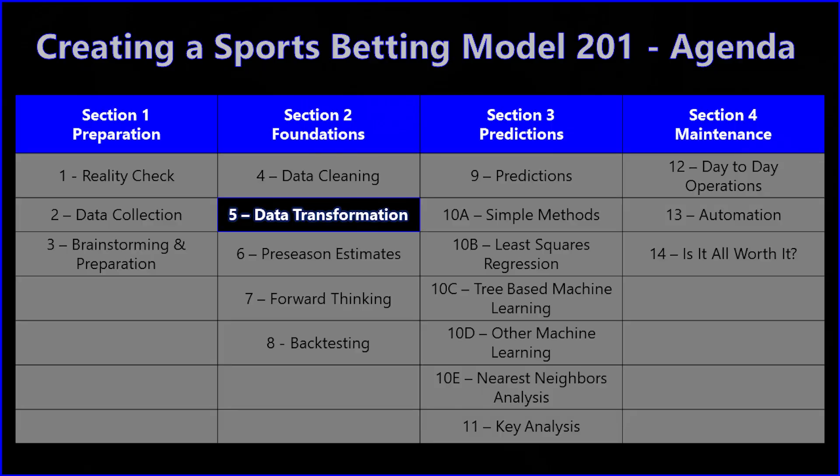Hey guys, welcome back to my channel. This is William Lease, your number one stop for data journalism, data storytelling, and sports betting. Today we're continuing with the creating a sports betting model 201 series, section two, part two, video number five overall. We're going to talk about data transformation, which is probably the most important part of any sports betting model.